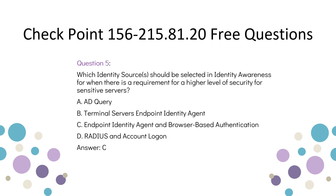Question 5: Which identity sources should be selected in Identity Awareness when there is a requirement for a higher level of security for sensitive servers? A. AD Query. B. Terminal servers endpoint identity agent. C. Endpoint identity agent and browser-based authentication. D. RADIUS and account logon. Answer: C.